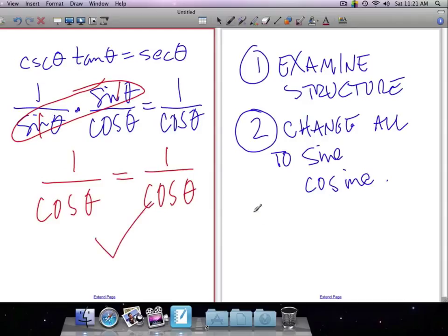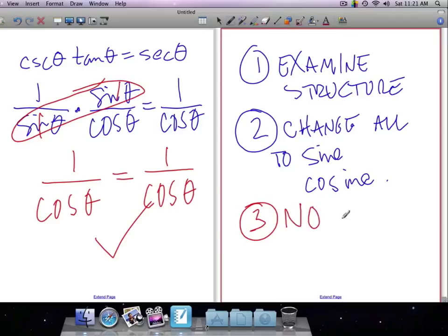There are a couple of rules that you have to follow as well. So typically you cannot do any algebra. When I say no algebra, that doesn't mean you can't multiply things by the value of one in the form of sine over sine, for instance. But you cannot add a number to both sides. You can't subtract.